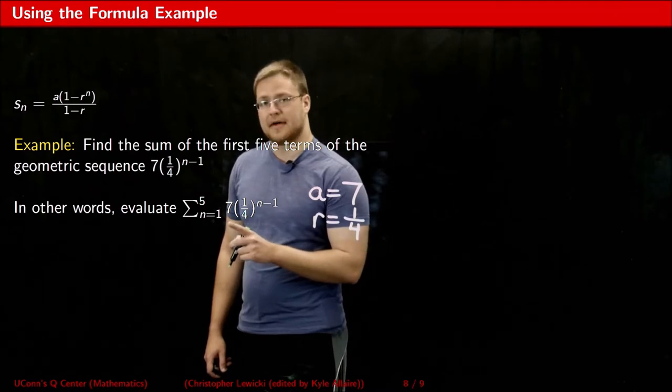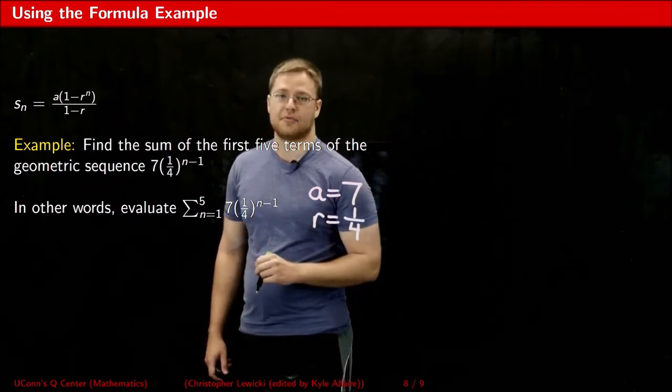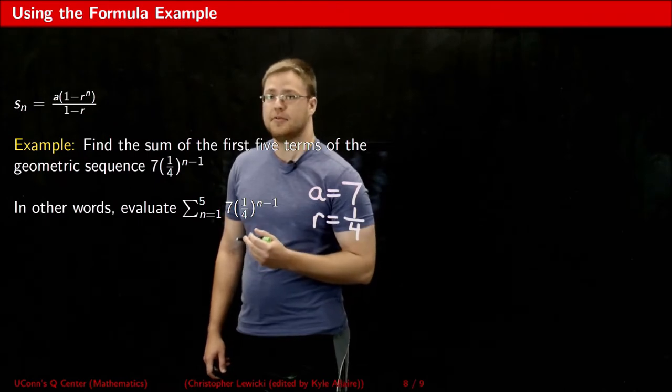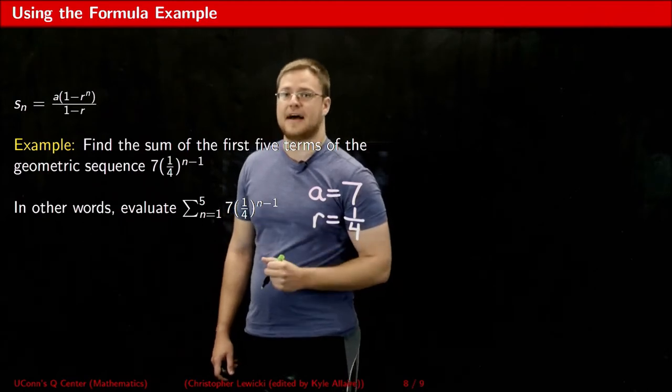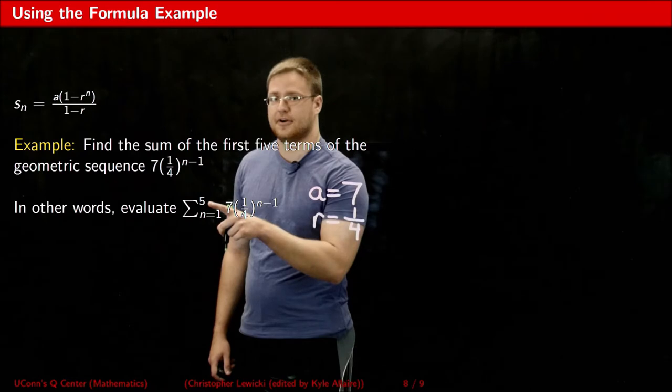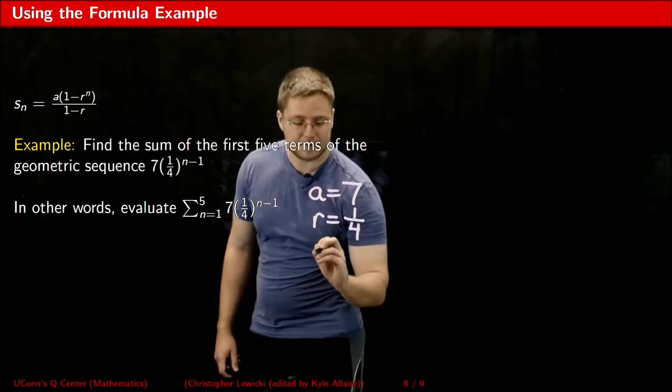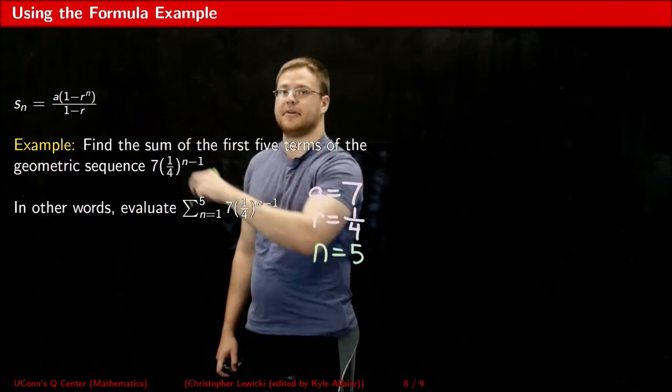My A value is seven, because that's the first term of the series, and my common ratio R is one-fourth. I'm going to substitute those values into this formula, and I also need to substitute in an N value. Because we're looking for the sum of the first five terms of the series, I'm going to set N equal to five, and substitute that value into the formula.